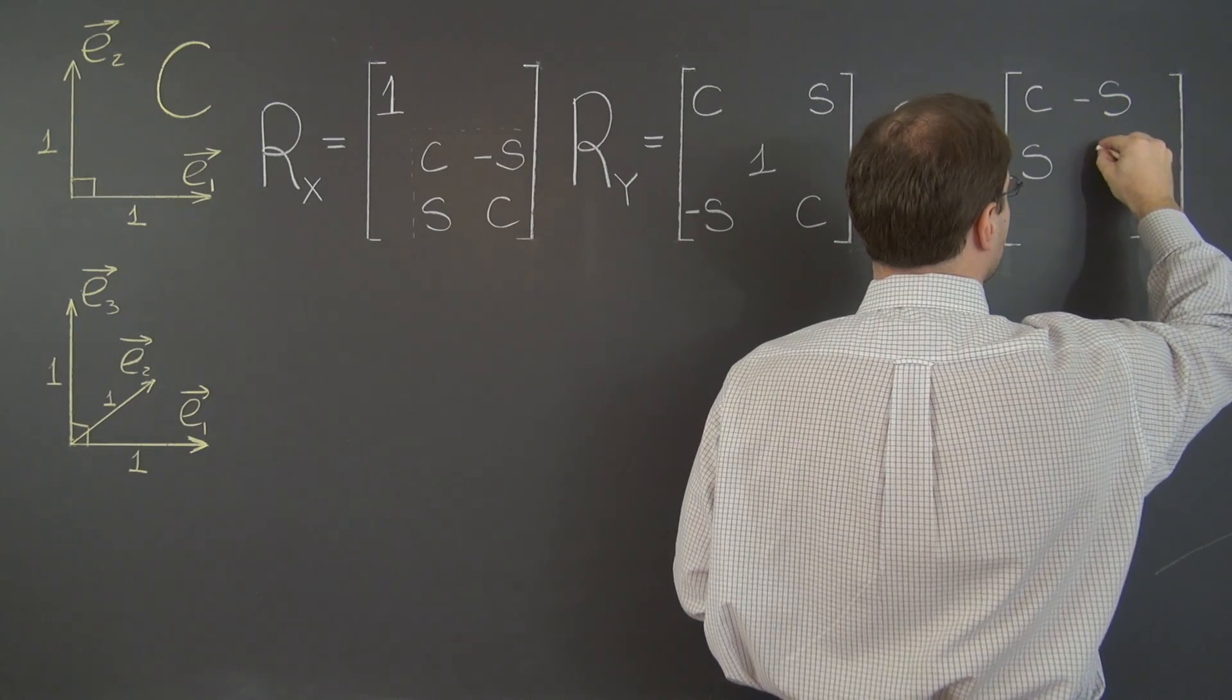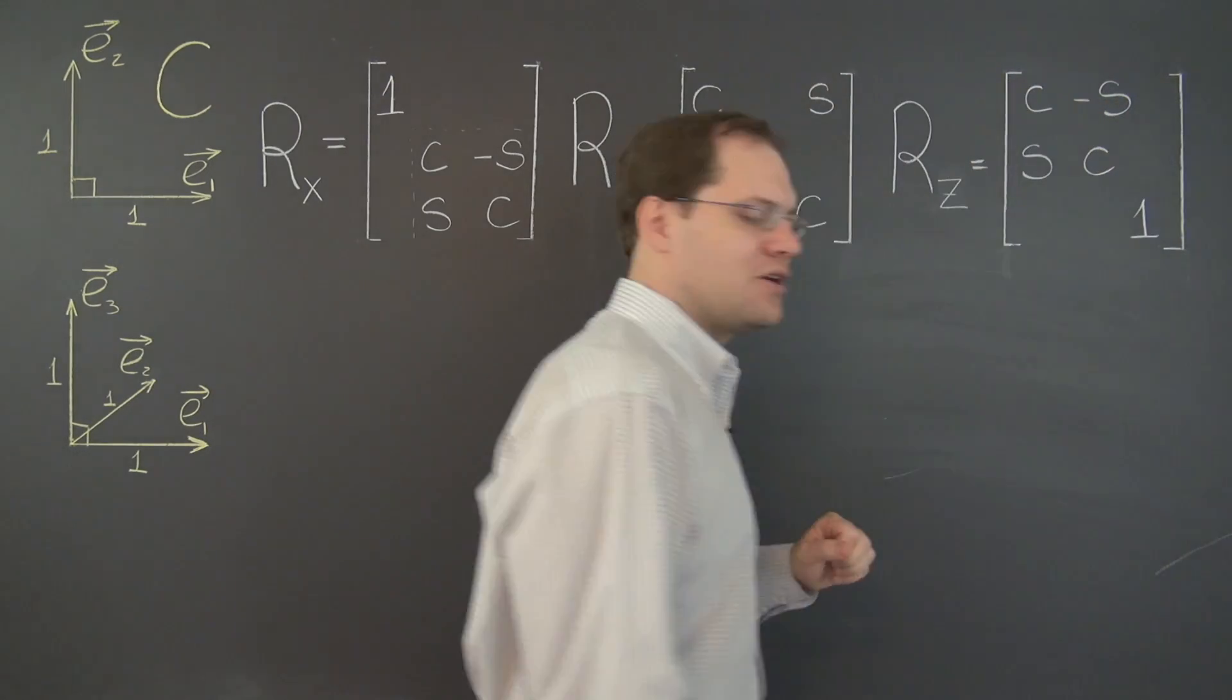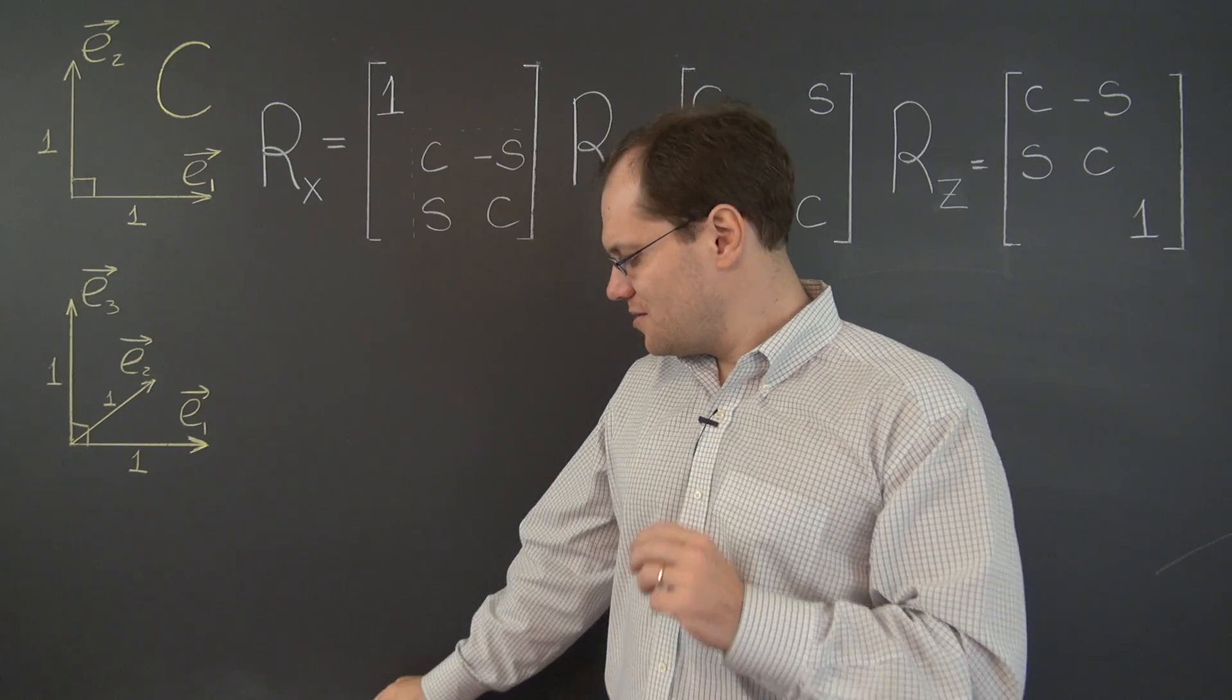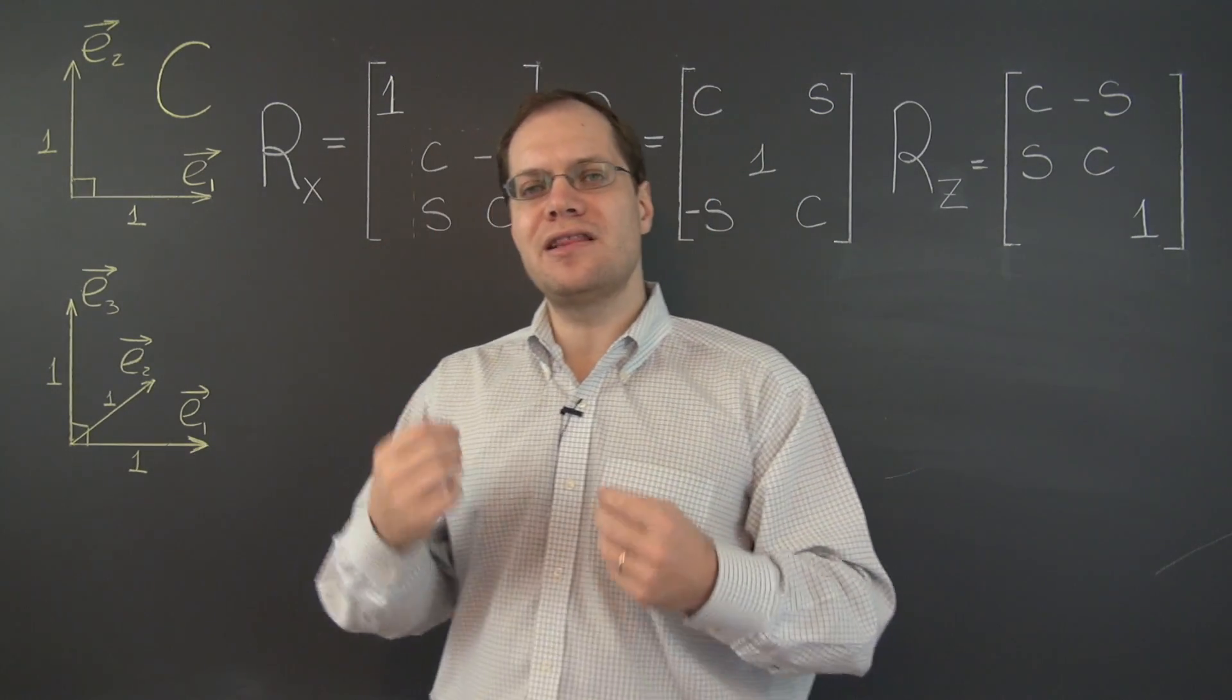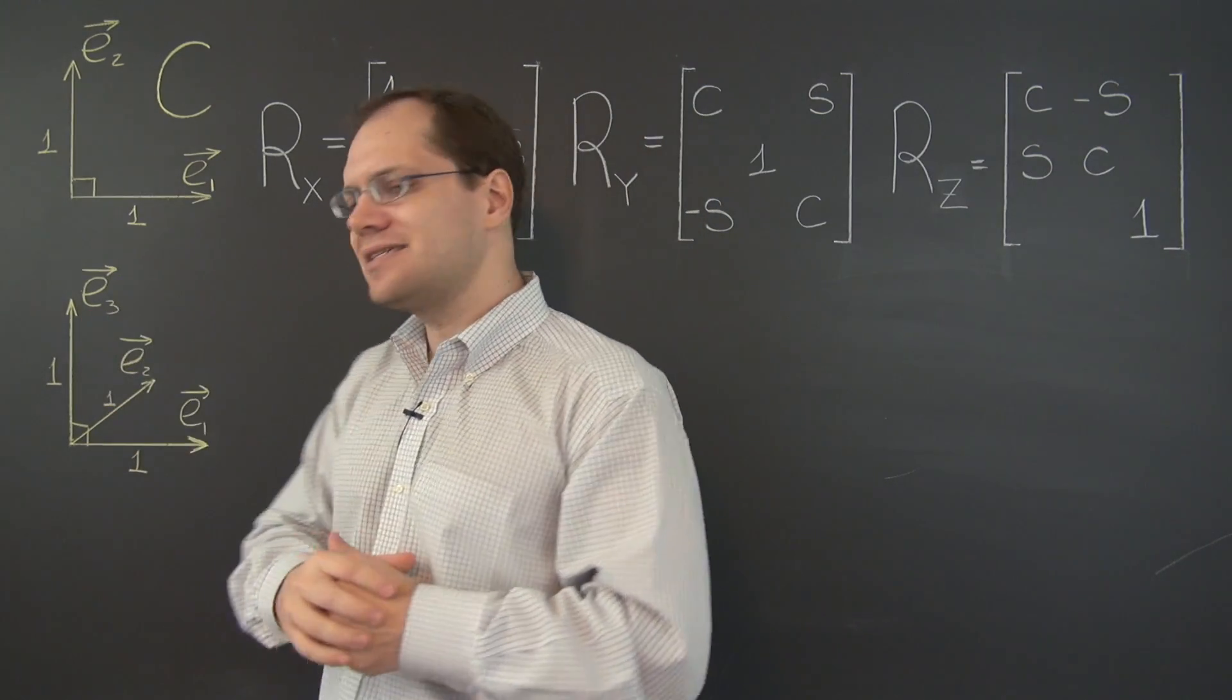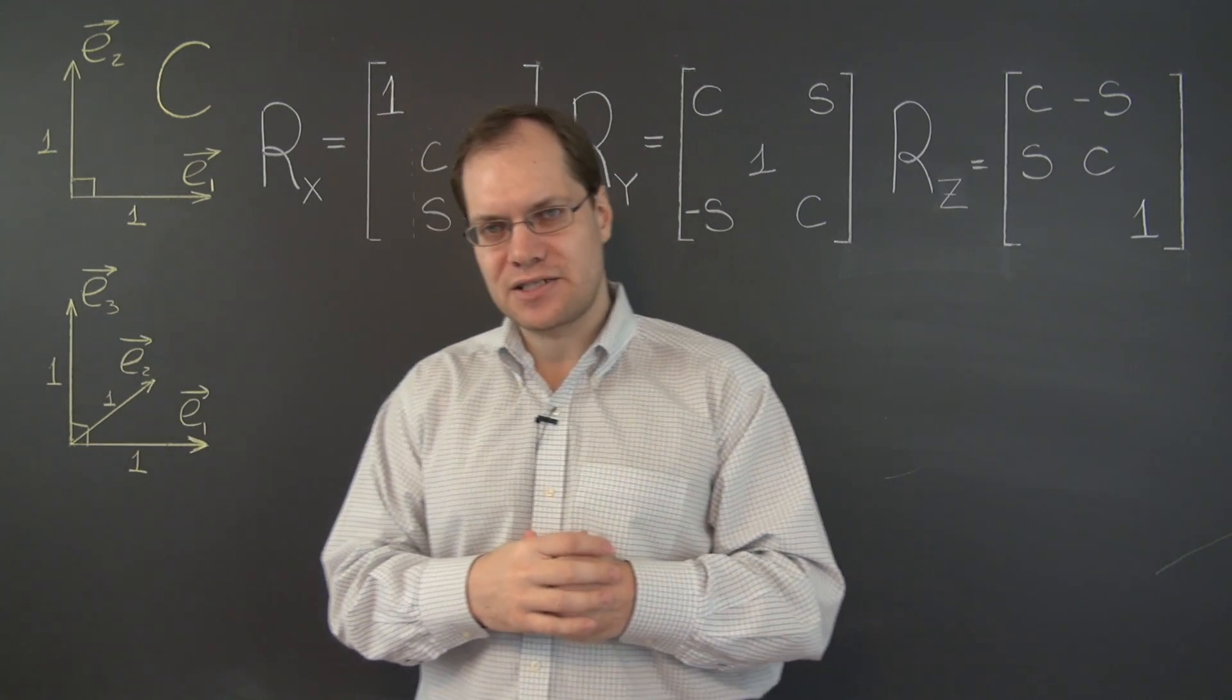And now we have our familiar rotation matrix right here. Cosine, sine, minus sine, cosine. There you go. These are the three matrices that represent the elementary counter-clockwise direction with respect to the axes aligned with the basis vectors.